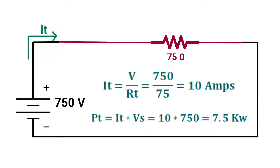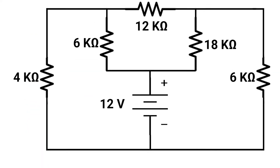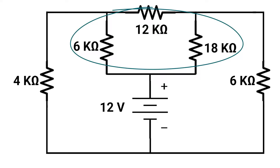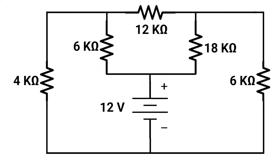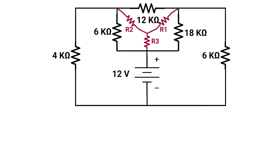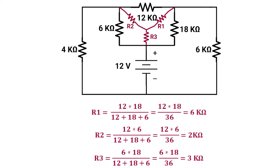Let's try solving a new example. This is a delta connection that we can transform to star connection. R1 will equal 12 times 18 over 12 plus 18 plus 6, which will equal 12 times 18 over 36, equaling 6 kilo-ohm. R2 will equal 12 times 6 over 36, which will equal 2 kilo-ohm.